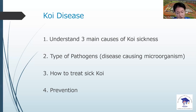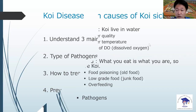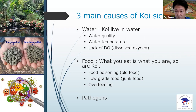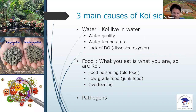And four, of course, we want to know how to prevent them from being sick. Three main causes of coir sickness are water, food, and pathogens. These are the three main causes of the sickness.